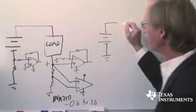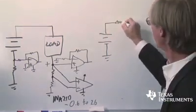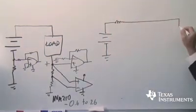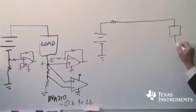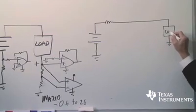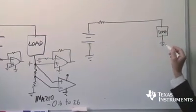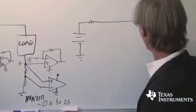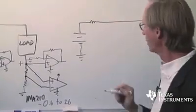There are other reasons for doing high side sensing. Take for instance a system with a remotely located load where it's desirable to be able to ground that load directly to the frame of the system and that allows us to only have to run one wire out to this load.